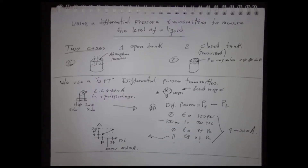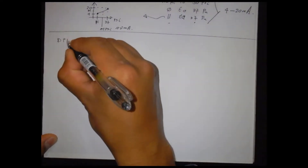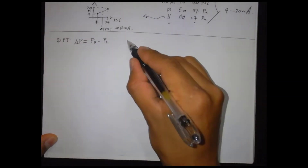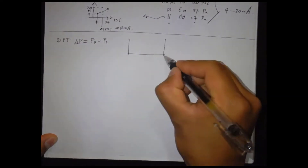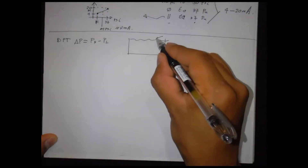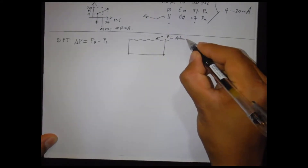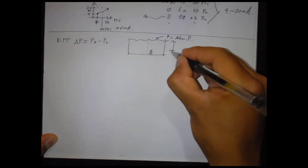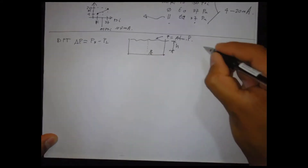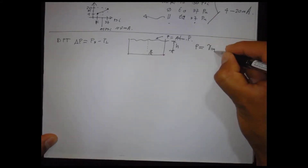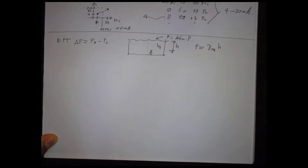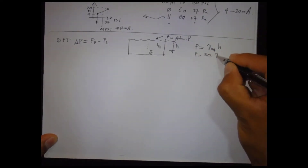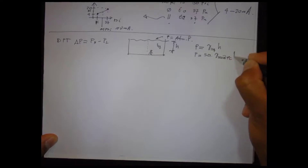Imagine you are in a pool some meters under the water. You will feel the water pressure, for example, in your ears. The equation states that the pressure on the liquid is equal to the specific weight times the distance from the surface to the point where we want to know the pressure. This distance is called height. We will use that principle here.